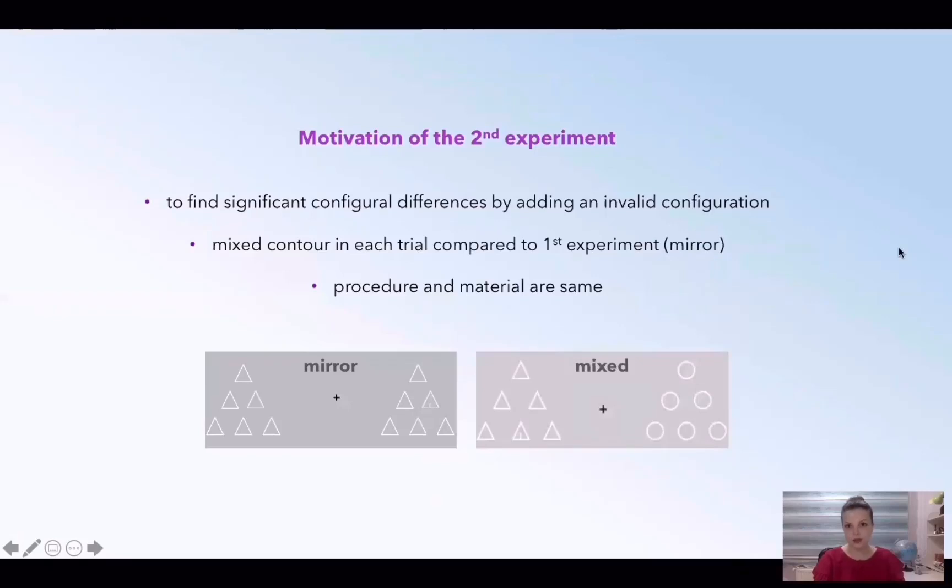Why we conduct a second experiment? Because we cannot find a significant main effect of configuration on reaction time, that's why we manipulate the validity of the configuration. And we use the mixed contour design instead of a mirror image. It means that in the mixed design, two types of contours are placed at the same time in each trial, and the rest of the procedure and the material are the same with the first experiment.